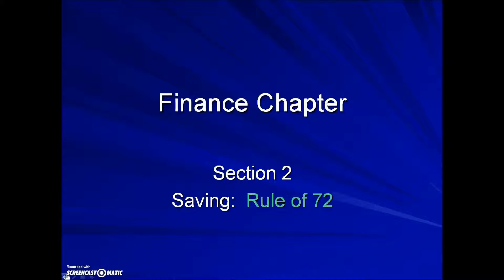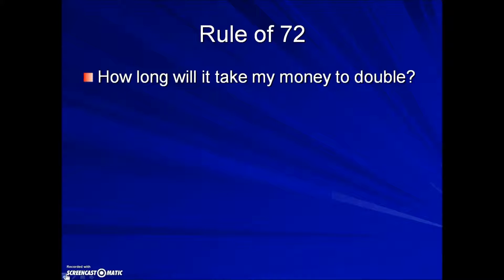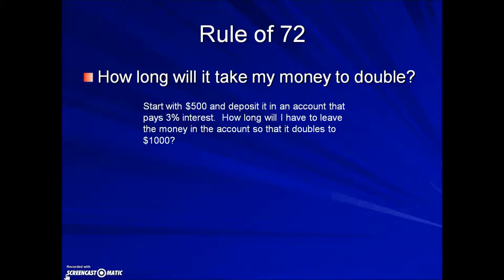Finance Chapter Section 2: Rule of 72. When the question arises, how long will it take my money to double, we're going to use something known as the Rule of 72. Here we have an example where they're starting with a $500 deposit in an account that's paying 3% interest. The question is how long will it take for that money in the account to double — in other words reaching $1,000 — with this interest rate of 3% as the growth factor.